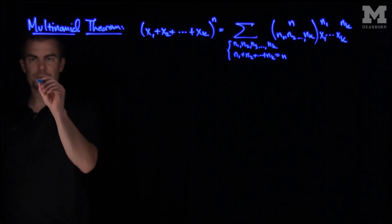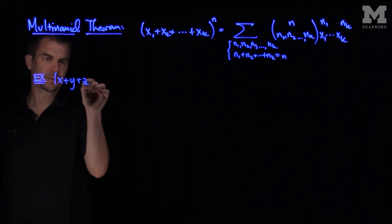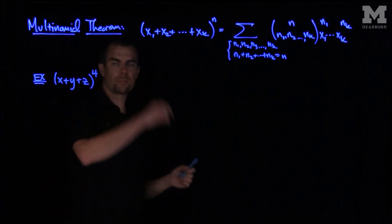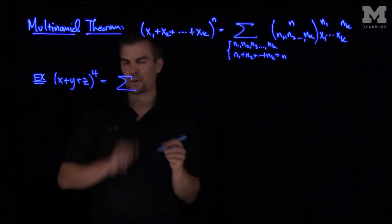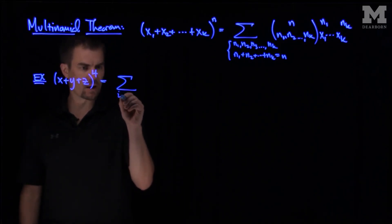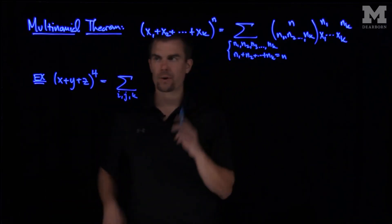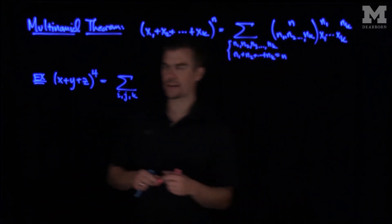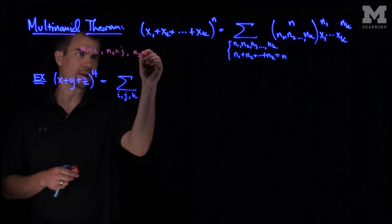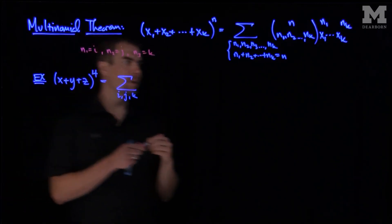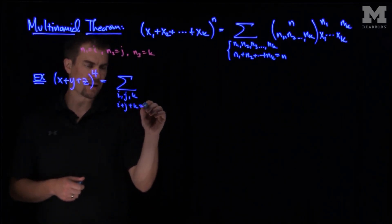If we look at (x + y + z)⁴ and we apply this, what we'll see is we're going to sum over, and we'll replace the n₁, n₂, n₃. We don't need indices, we only have three of them. What I'll do is I will say over all i, j, and k, so three indices. So here what I'm really doing is I'm setting, re-indexing this by saying that n₁ is equal to i, n₂ is equal to j, and n₃ is equal to k.